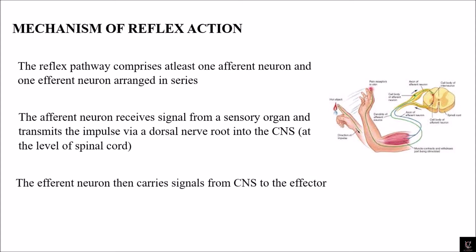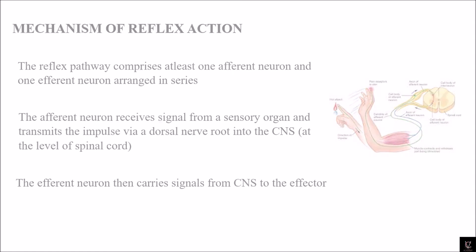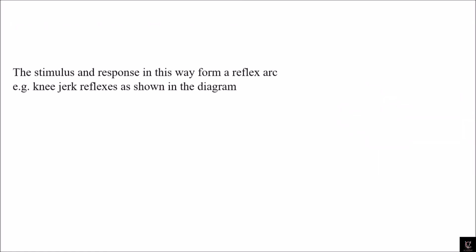The efferent neuron then carries signals from the CNS to the effector. In the spinal cord, an interneuron coordinates and sends information to the efferent neuron to carry signals from the central nervous system — which here is the spinal cord — to the effector. The stimulus and response in this way form a reflex arc, as shown in the knee jerk reflex diagram.